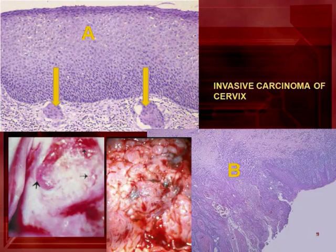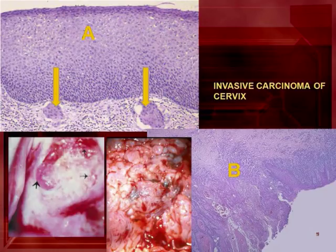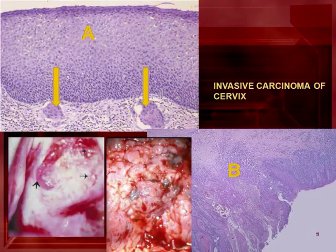This slide shows invasive carcinoma of the cervix. Image A is a microscopic view of microinvasion — watch the clumps of cancer cells which have breached the basement membrane. The invasion is less than 3 mm, which is why it is called microinvasion. Image B is frank invasive cancer, where a wide area of cervical stroma has been infiltrated by cancer cells. This patient must be treated either by surgery or radiotherapy.